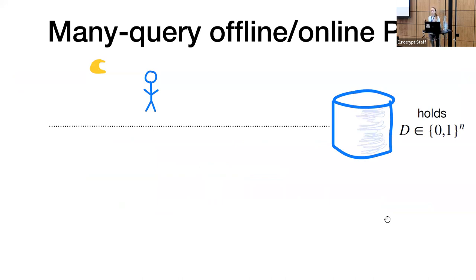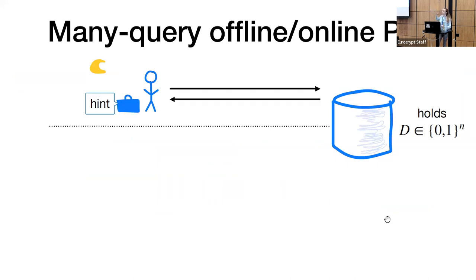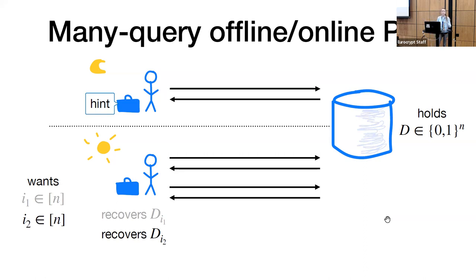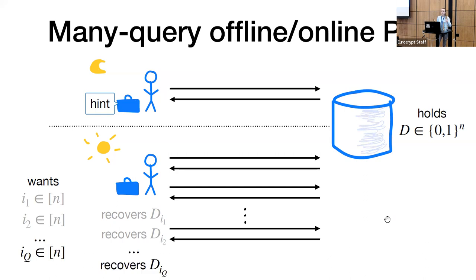Our PIR schemes look as follows. First, our client runs an offline phase with the server, which requires linear server time. At the conclusion of this offline phase, our client retrieves and stores a small hint about the database contents — this hint has size sublinear in n. Later, our client decides it wants to read some database index, say index i1. It interacts with the server, sends a query, gets back a reply, and using this reply and the hint, our client recovers the i1-th database bit. Even later, the client reads index i2 by running another online phase, and so on for Q queries.